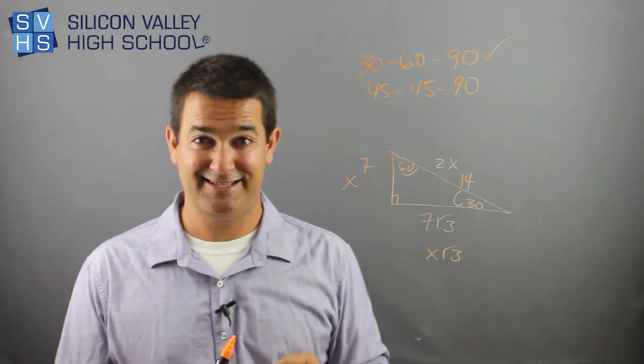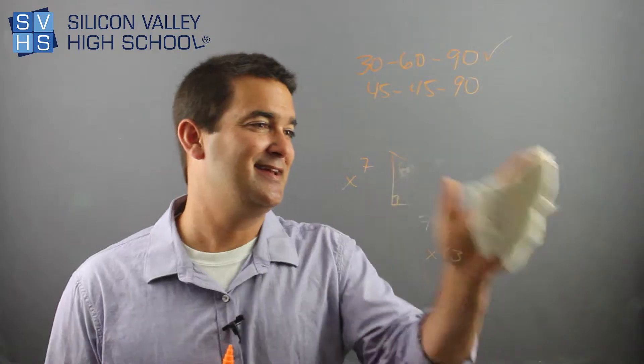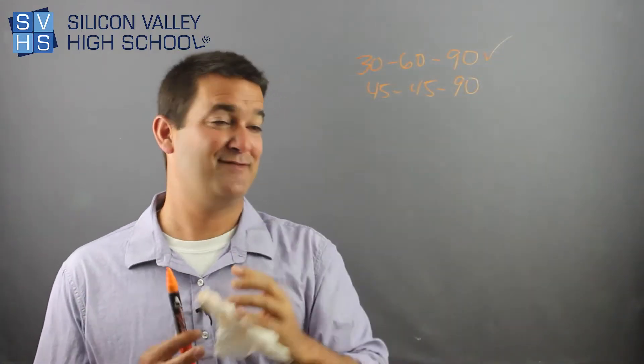Okay now, here's the one that is horrible. Ready? And remember, we're still on 30-60-90 triangles. Follow me. This is lame.